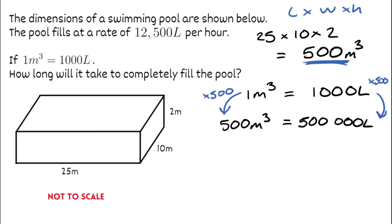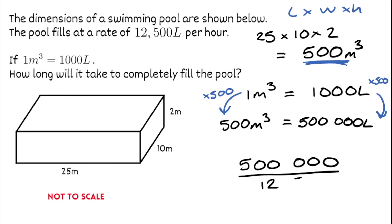The question asks how long it will take to fill the pool. The pool fills at a rate of 12,500 litres per hour. We know the total amount needed is 500,000 litres, so we divide 500,000 by 12,500. That gives us 40 — so it will take 40 hours to completely fill the pool.